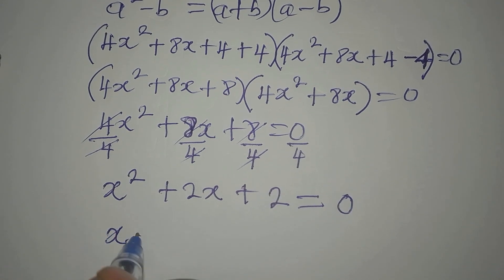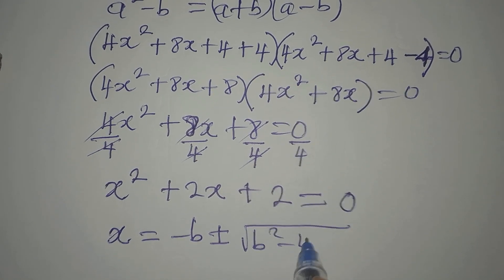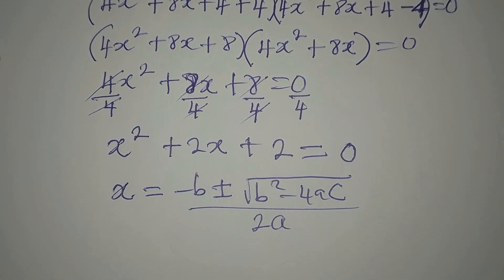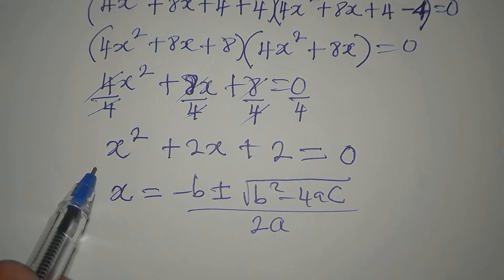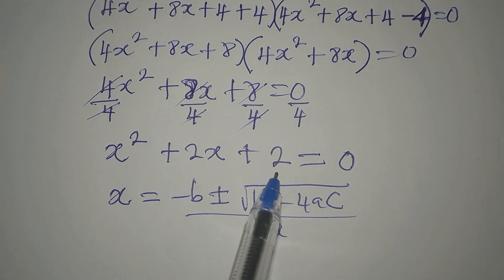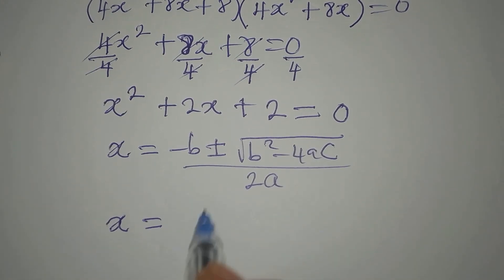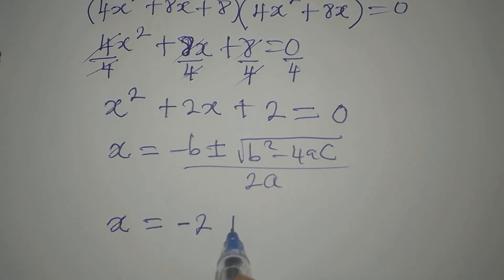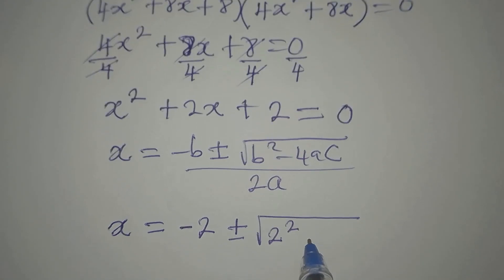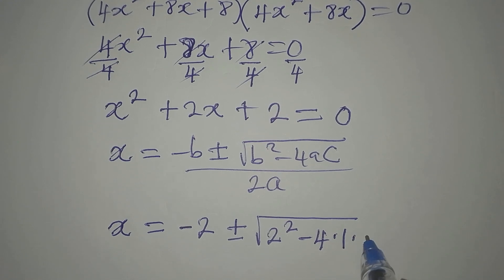The quadratic formula is x = (-b ± √(b² - 4ac)) / 2a. Our a is the coefficient of x², which is 1. Our b is 2 and our c is also 2. Substituting in: x = (-2 ± √(2² - 4×1×2)) / (2×1), which gives us denominator 2.